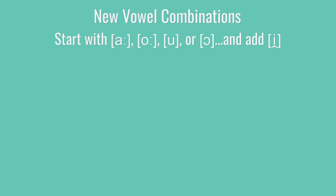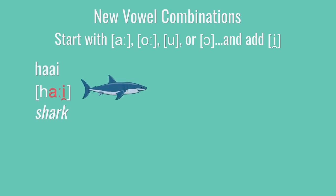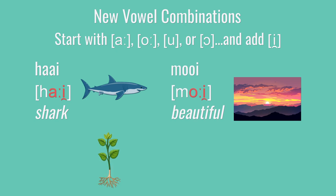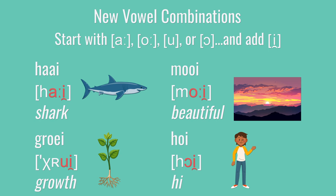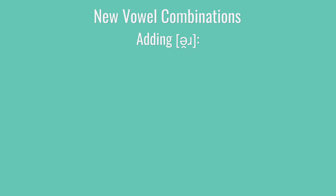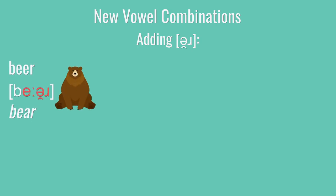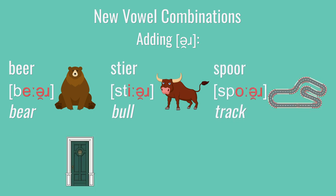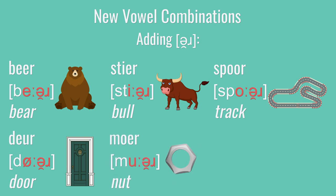Then we introduced four vowel combinations that take Dutch vowels or diphthongs and stick an E at the end: AI as in hoog, OOI as in mooi, OOI as in groei, and OOI as in hooi. And then we covered a big group of gliding vowels ending in an ER sound: AIR as in bear, EAR as in steer, OOR as in spore, OOR as in dur, and OOR as in moor.